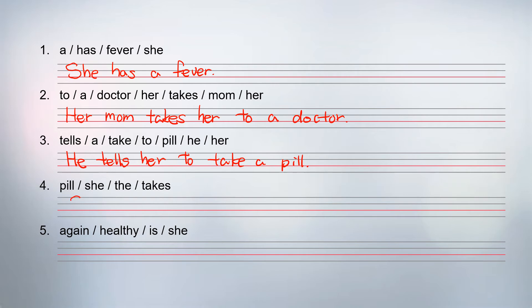Next one: 'she' is the subject. The verb is 'takes.' She takes the pill. Last one: 'she' is the subject, 'is' is the verb. She is healthy again.